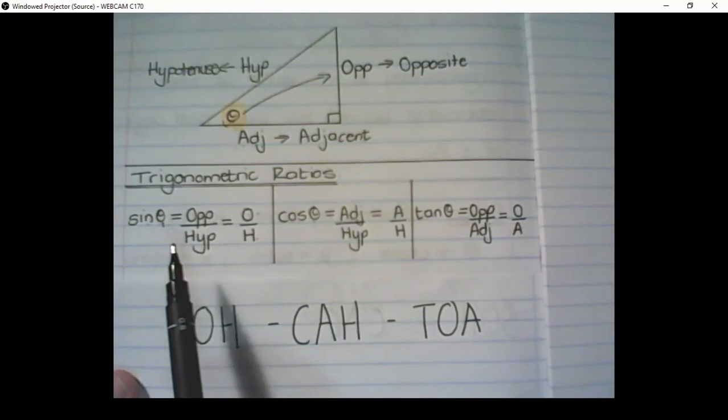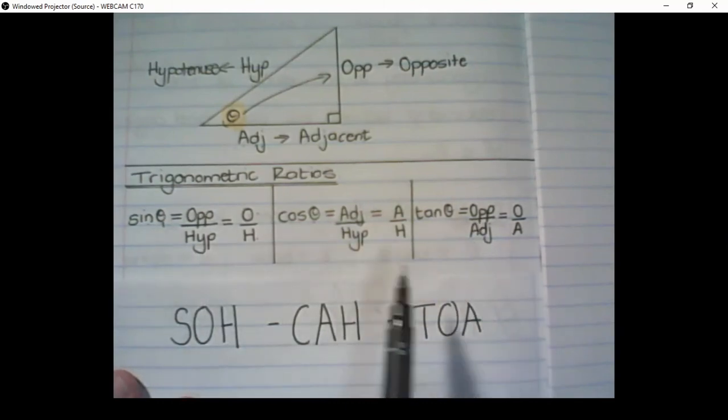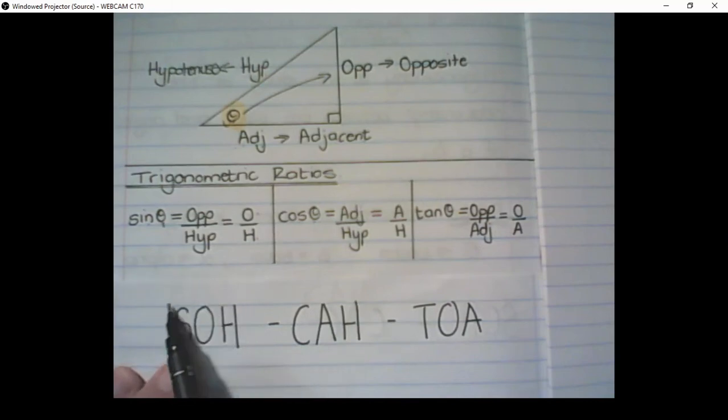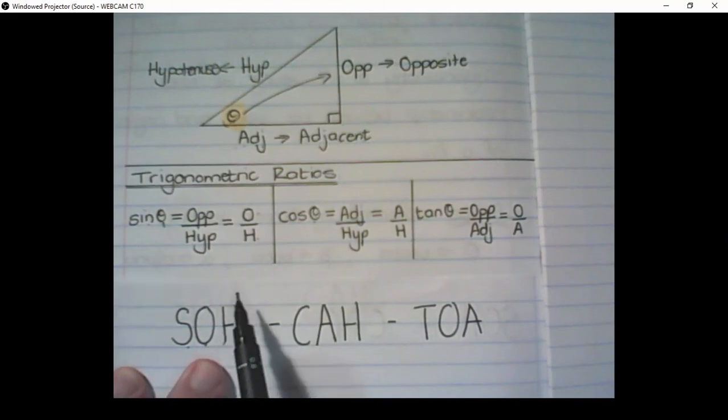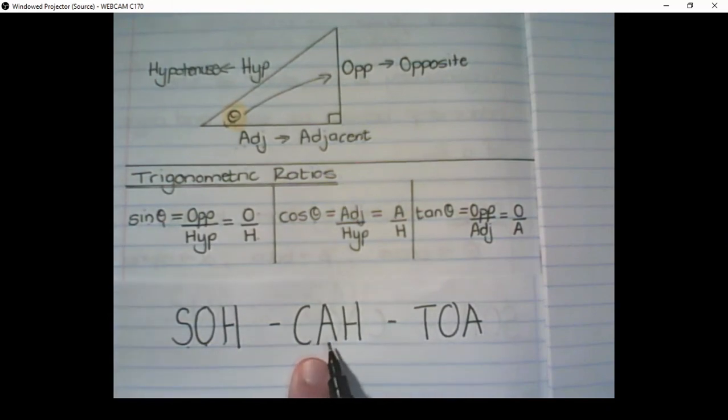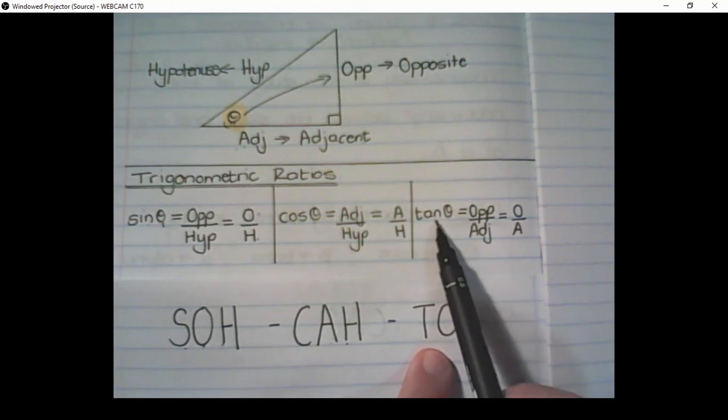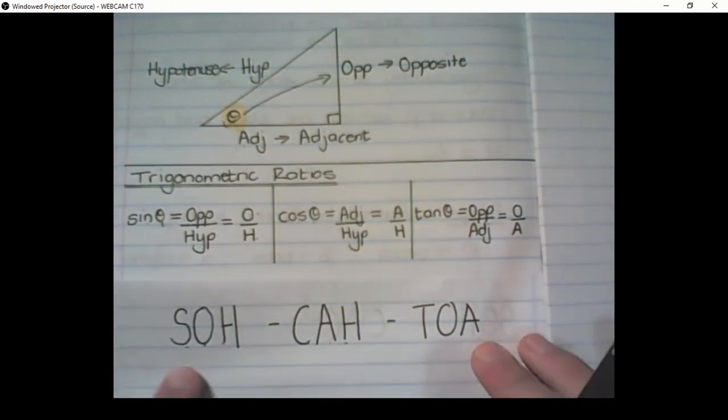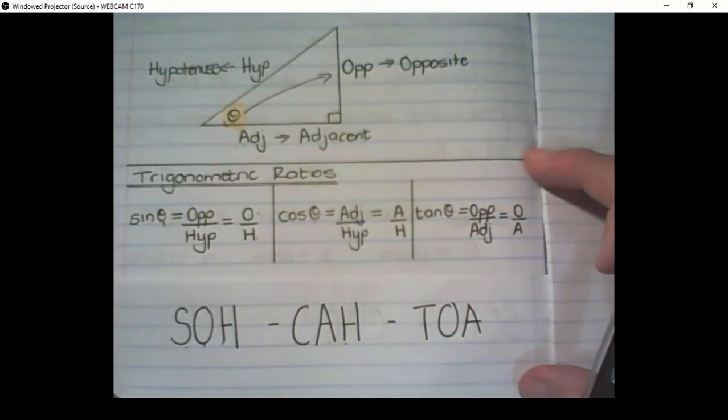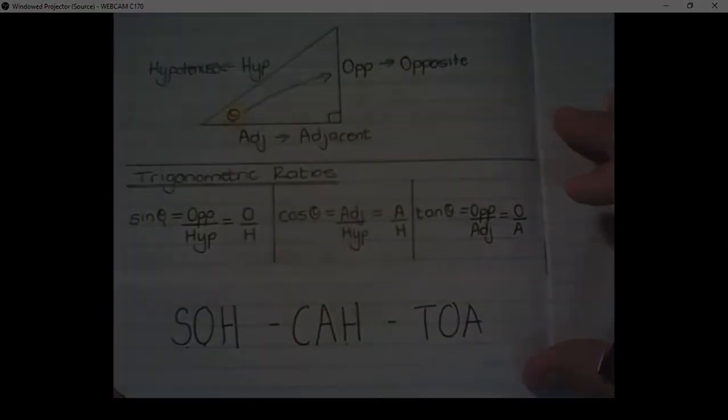So an easy way to remember these three ratios is the word SOH-CAH-TOA. The first part, SOH, is sine equals the opposite over the hypotenuse. CAH is cosine equals the adjacent over the hypotenuse. And the TOA part stands for tan equals the opposite over the adjacent side. Please take your time to memorize this. It is important for the remainder of your school career.